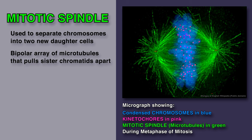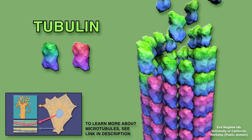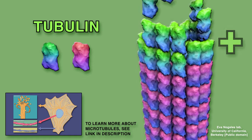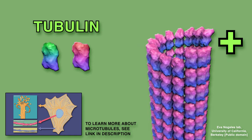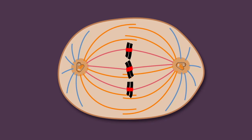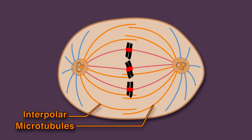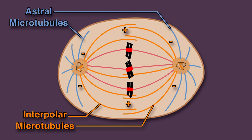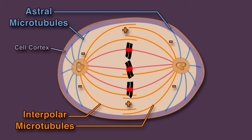The mitotic spindle is a bipolar array of microtubules that pulls sister chromatids apart. These microtubules have minus ends focused at the spindle poles and plus ends that radiate outwards. Microtubules are composed of tubulin subunits, which can get added or removed from the plus end of the microtubule, making it grow or shrink. There are three types of microtubules in the mitotic spindle. Interpolar microtubules are those whose plus ends interact with the plus ends of interpolar microtubules originating from the opposite spindle pole. Astral microtubules radiate outward from the poles to contact the cell cortex; their job is to position the spindle in the cell.